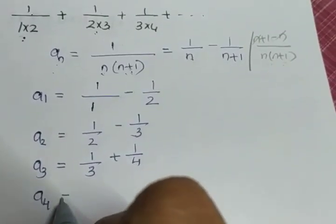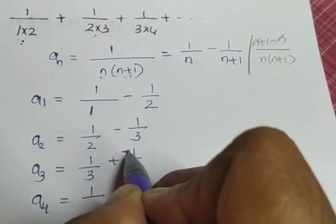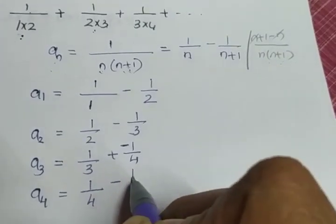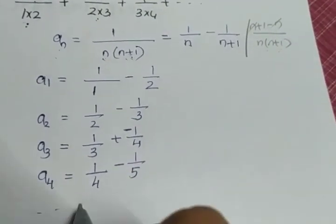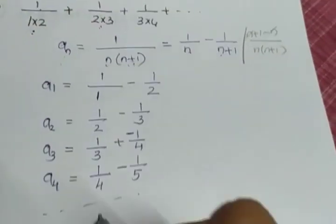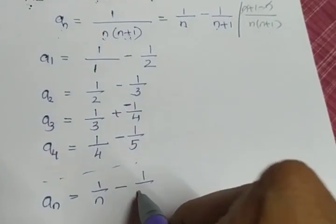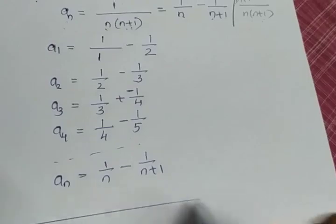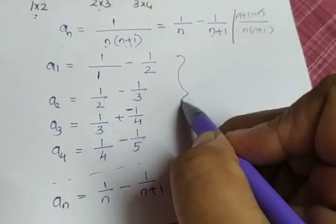If I substitute n as 4, I will be getting 1... sorry, this is minus 1 by 4 minus 1 by 5. And it goes on and I am writing the nth term. The nth term we already know: 1 by n minus 1 by n plus 1. And again, I am going to add all these terms.